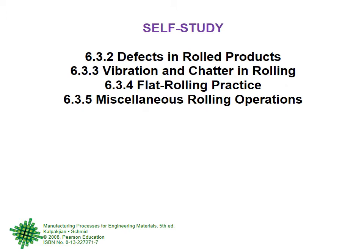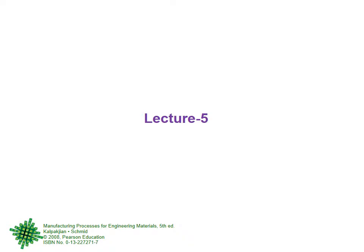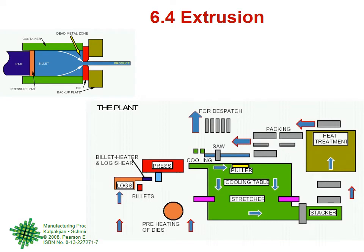After roll bending and slab spread, we completed all basic rolling information and moved to defects in rolled products, vibration and chatter in rolling, flat rolling practice, and miscellaneous rolling operations. Those slides are for self-study — a reminder that multiple choice, true/false, and small theory questions can come from self-study areas, but detailed numerical problems will not be asked from those topics. The last slide was extrusion, indicating we finished rolling and would start extrusion next time.